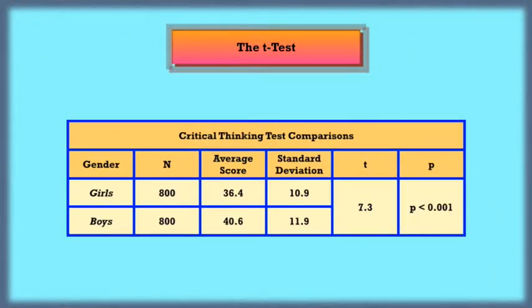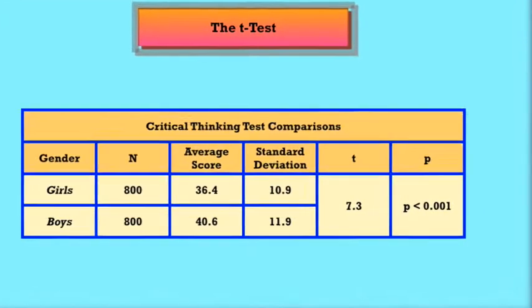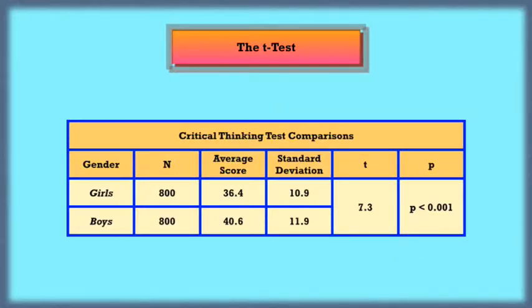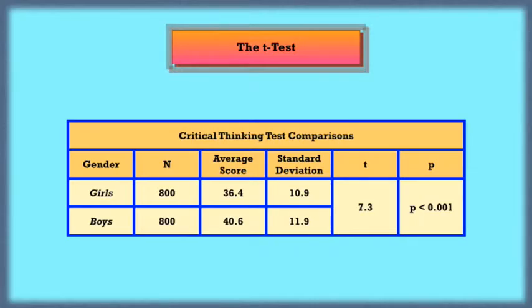The statistics will tell us that a value as high as that, the chance that that happened just by chance is less than 0.001. That's less than 0.1%. In other words, one in a thousand. In other words, you're 999 times out of a thousand confident that in that country, under these circumstances, boys are performing better in a test of critical thinking.